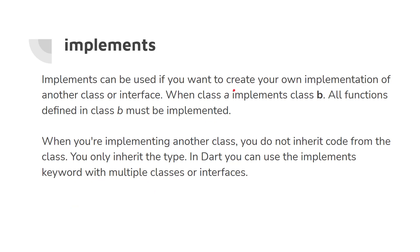'Implements' can be used if you want to create your own implementation of another class or interface. When class A implements class B, all functions defined in class B must be implemented. When you implement another class you do not inherit code — you only inherit the type. In Dart you can use implements with multiple classes or interfaces.